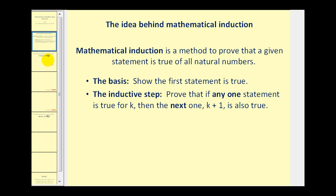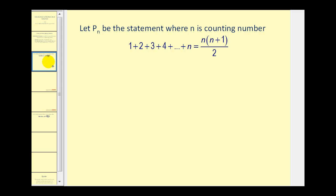Let's take a look at an example. If we let P sub n be the statement where n is a counting number, then one plus two plus three all the way to plus n is equal to n times the quantity n plus one divided by two.